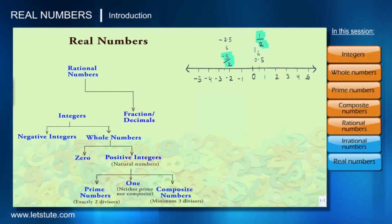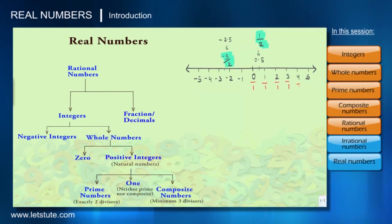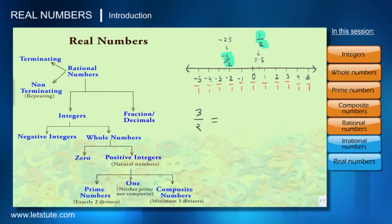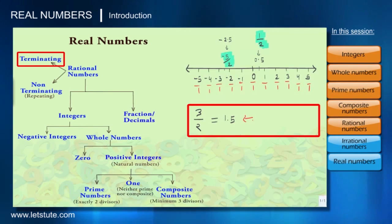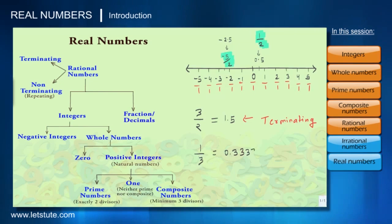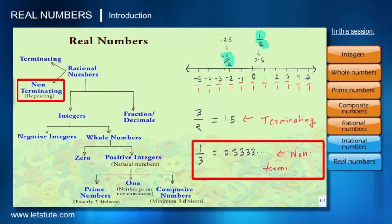Note that every integer is also a rational number, as we can write 0 as 0/1, 1 as 1/1, 2 as 2/1, and so on. Rational numbers can be written in decimal form, and this decimal form can either be terminating or non-terminating. For example, 3/2 is a rational number and its decimal form is 1.5 — terminating at 5, so this is a terminating decimal. Whereas 1/3 is also a rational number, and its decimal form is 0.333... repeating forever, which is a non-terminating decimal.